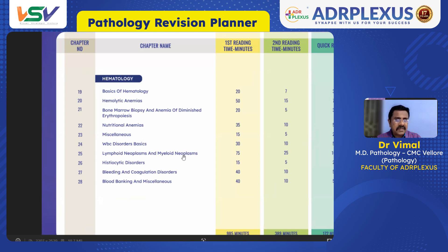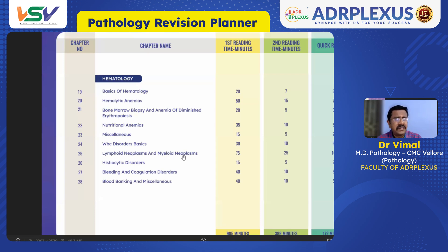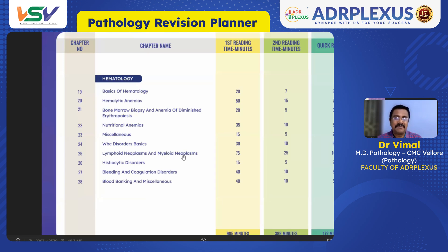We know all of you are reading well in the first phase, but in the second and third revisions you may have some doubts — feel free to contact us at any point. We are here to help you, and the VSV team will also be helping you through this revision planner. This is just for your convenience and to give you hope that this is possible. Wish you all the best — see you soon in your dream institution with your dream score!